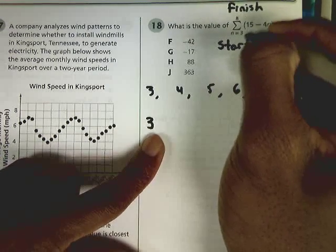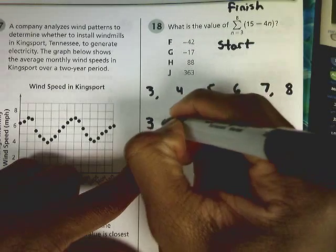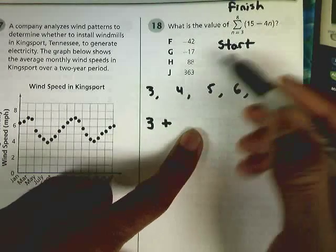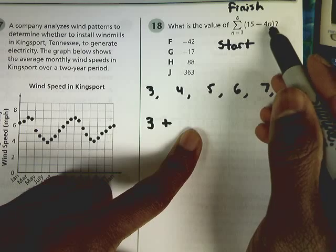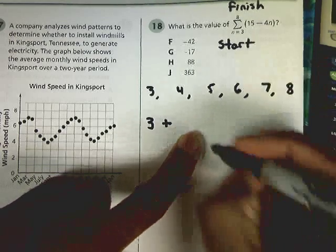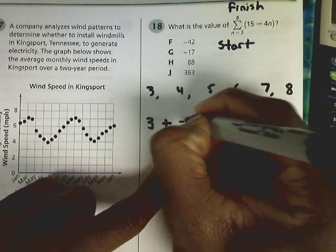And again, we're adding all these numbers together, so now we have to add what we get when we plug in the 4. 4 times 4 is 16. 15 minus 16 is just going to give us negative 1.